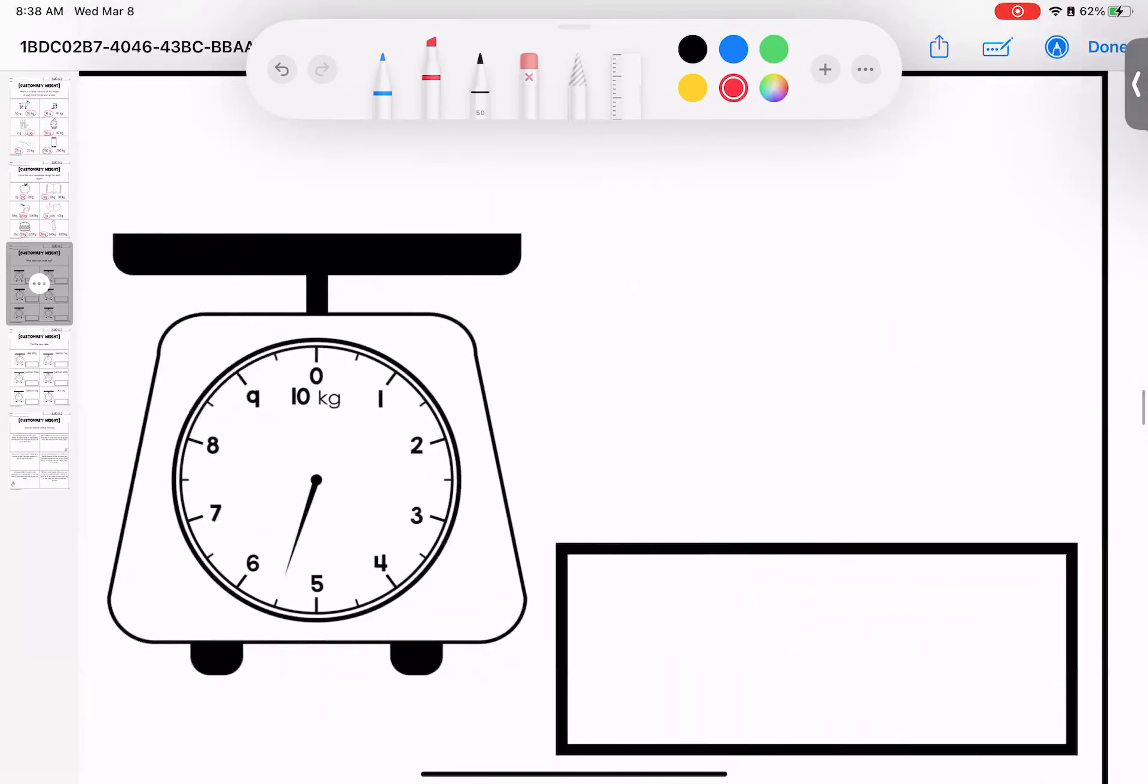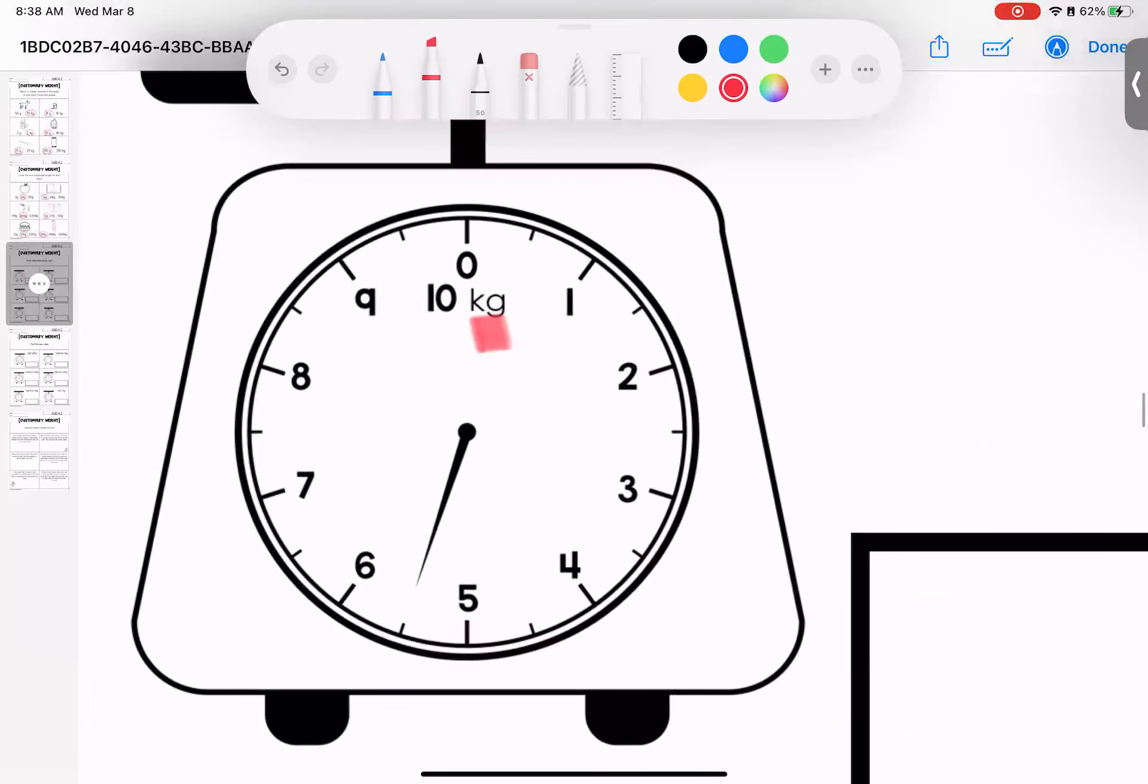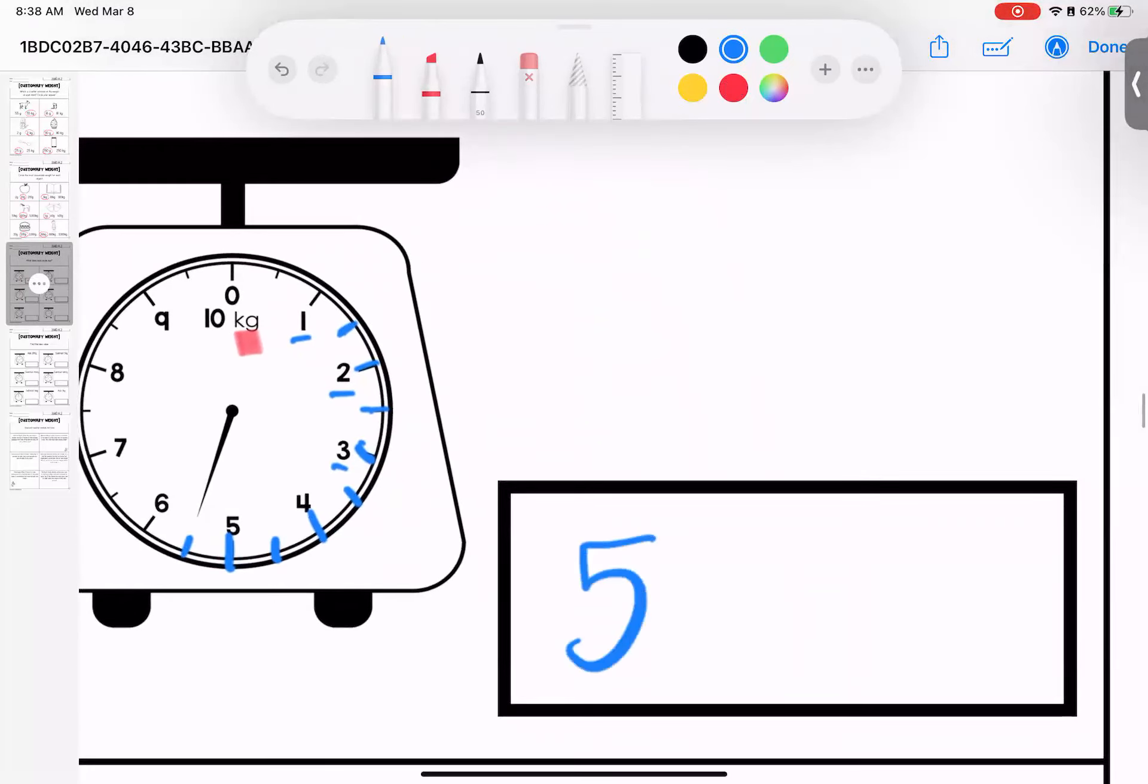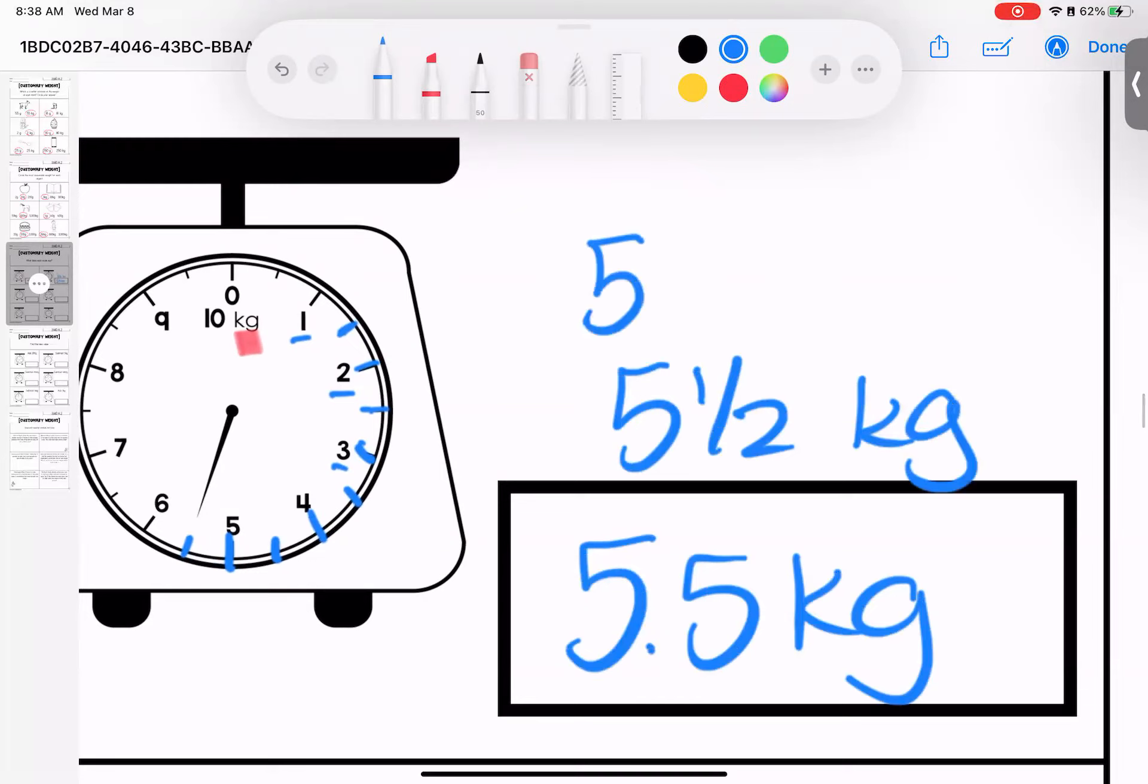This one, we are looking at kilograms. I notice that I have my big lines which have the numbers, and then I have one line in between. And when there's one line in between, that tells me it's a half. So if I'm looking through, I have one, one and a half, two, two and a half, three, three and a half, four, four and a half, five. This would be five and a half. You could say five point five kilograms or five and a half kilograms.